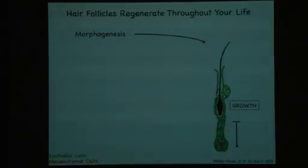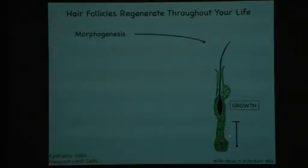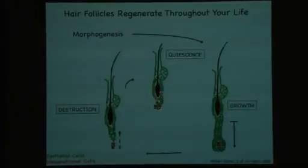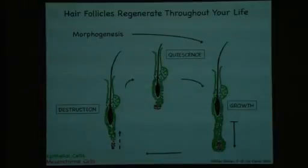This is very counter-intuitive because your hair grows outwards. But in order to do that, your follicle needs to expand downwards and prepare differentiated cells that feed into the shaft and push your hair outward. Then this lower part destroys itself. The follicle lands into this short form, and the cycle repeats itself in a stereotypic manner for the rest of the life of the mice, and also your life.